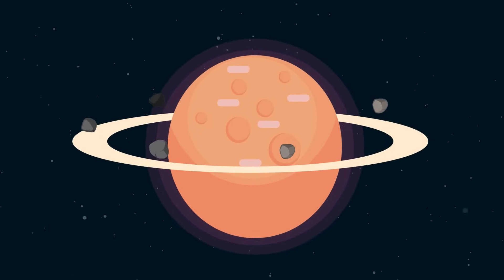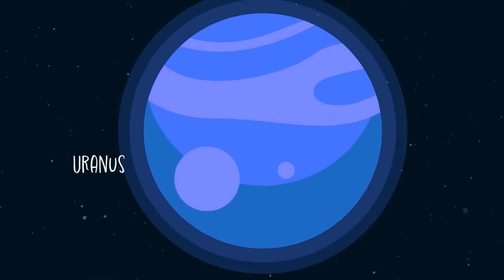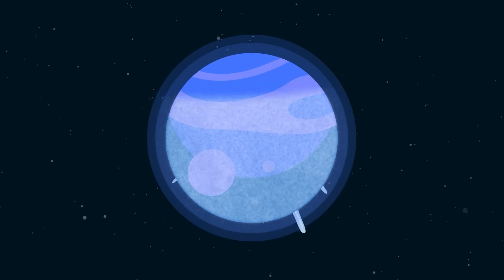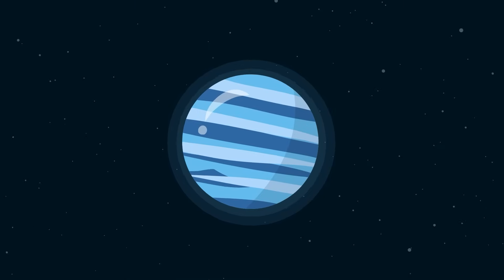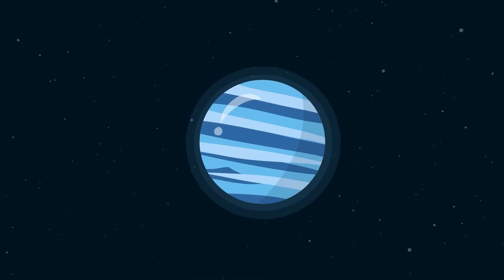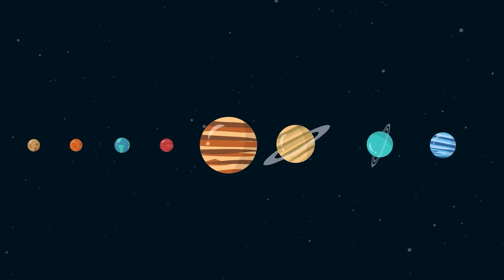in a splendid flow. Uranus, tilted with a bright blue hue, an icy giant mysterious and true. Neptune, so distant, in darkness it gleams. A deep blue planet where the wind screams.